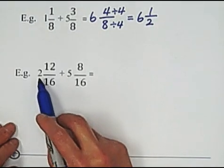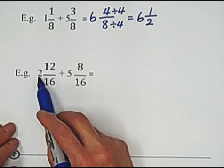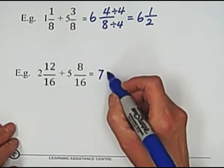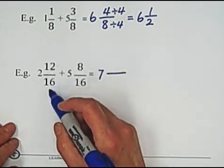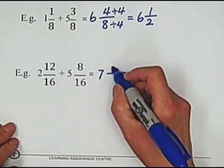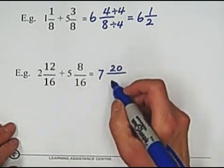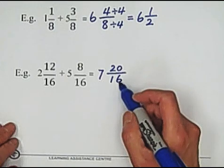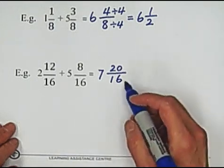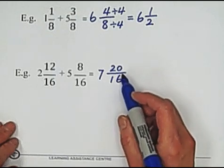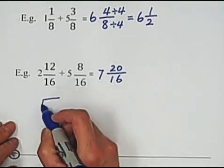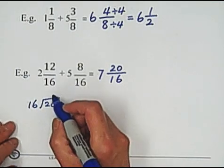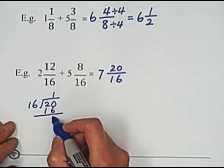The second example. First, add whole number portion. 2 plus 5 equals 7. Then, add the numerators because same denominator. 12 plus 8 equals 20. Keep denominator unchanged. And 20 over 16 is an improper fraction, we can say. So we need to simplify it by dividing 20 by 16.